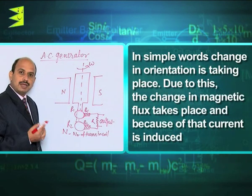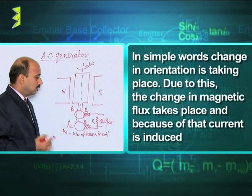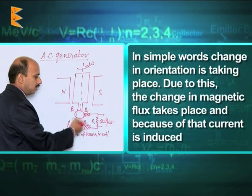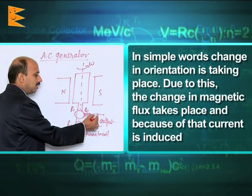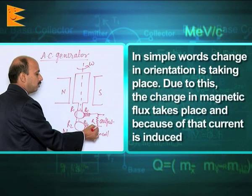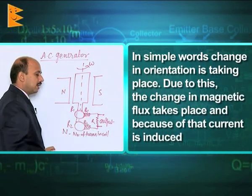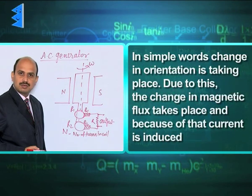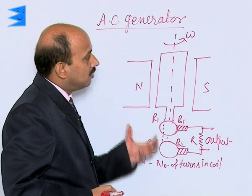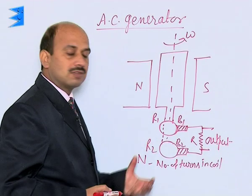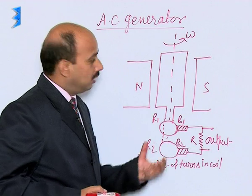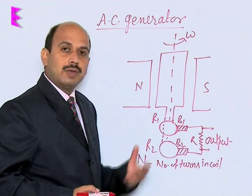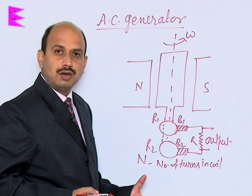Because of that, current is induced. That current comes outside and the output can be taken across this resistance. Now we have to study how this current is actually produced here.